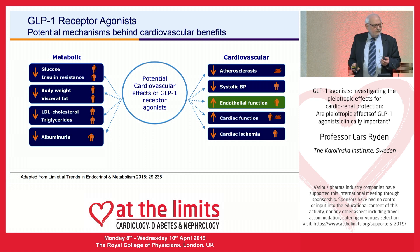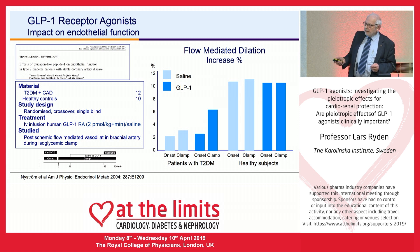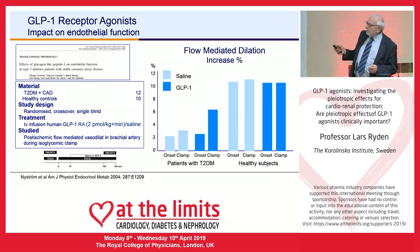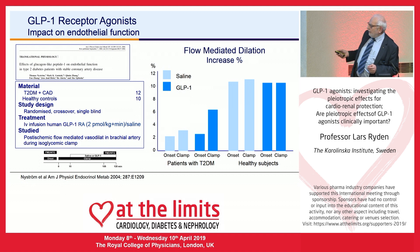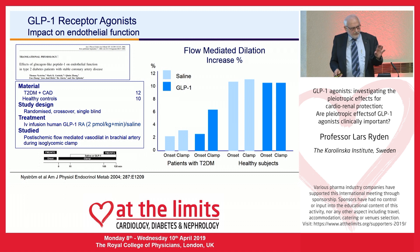Endothelial function is much talked about and very important, but less well studied. In a Swedish study, 22 patients — some healthy controls, some with type 2 diabetes and coronary artery disease — participated in a randomized crossover study measuring flow-mediated dilation of the brachial artery. Patients with diabetes had less efficient flow-mediated vasodilation than healthy controls. But after initiation of a GLP-1 receptor agonist, it improved — which could be important for coronary flow, given its relationship with brachial artery flow-mediated vasodilation. However, this involved few patients and was an acute observation.